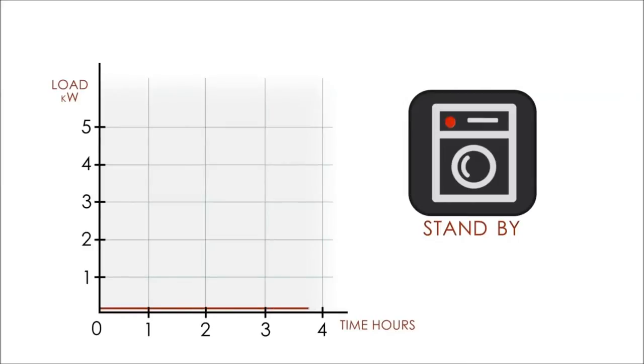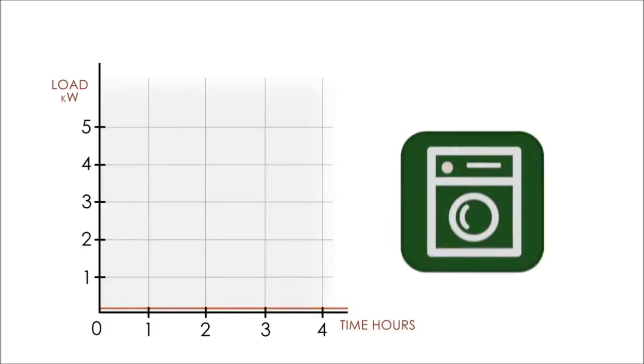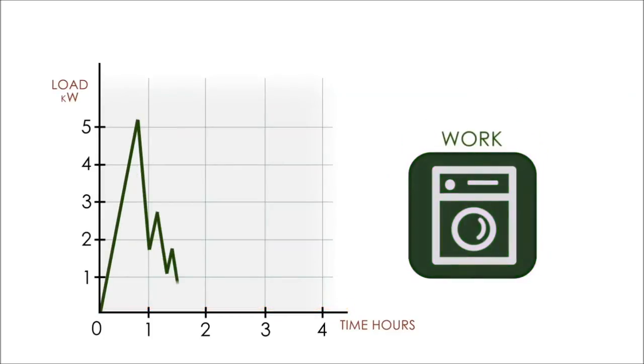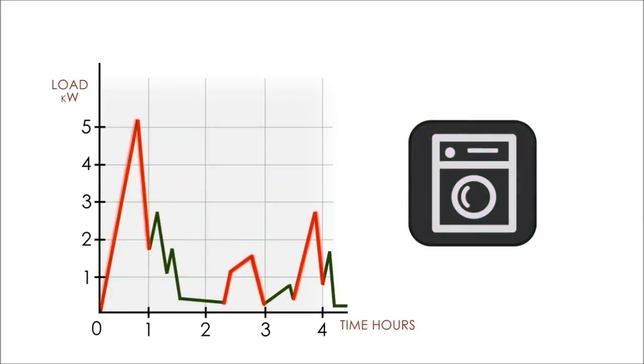For example, a washing machine when in standby consumes very little power. But when it heats up water inside, it has a load of up to 5 kilowatts, but only for a short period of time. In a working cycle, it might have a total consumption rate from 0.5 to 1.5 kilowatts per hour.